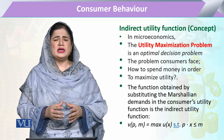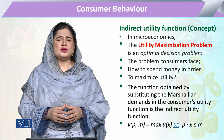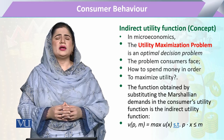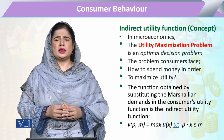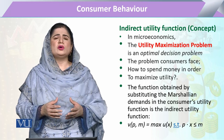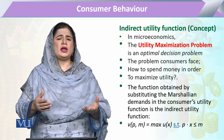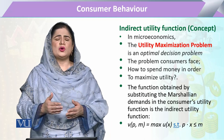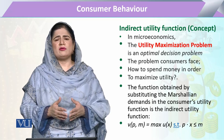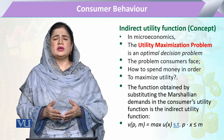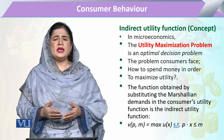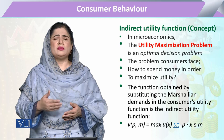For the Marshallian demand function, we substitute the part of that function where income appears. That income is replaced by the budget or expenditure constraint, because whatever a consumer is going to spend cannot exceed his income. So we equate what he spends to his income, and this expenditure is substituted into the Marshallian demand function.